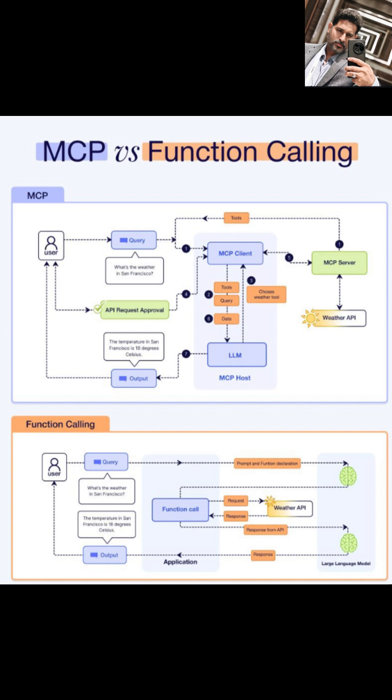Now let's talk about the more traditional method, function calling. Same scenario, you ask, what's the weather in San Francisco? Here's what happens. The system makes a function call tied directly to a weather API. It sends the request, gets the data back. The LLM formats the answer and gives it to you, done. No approval needed, no complex orchestration. It's faster, but not as flexible or transparent.